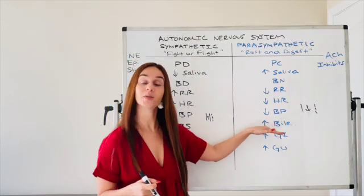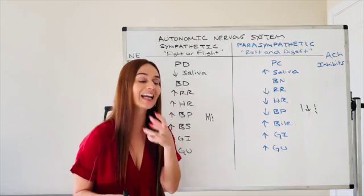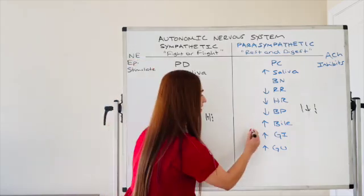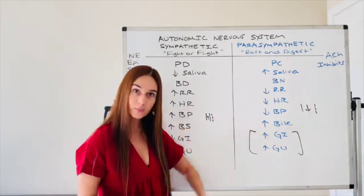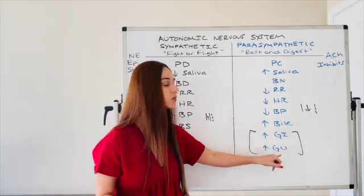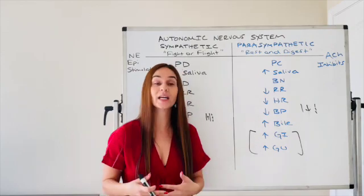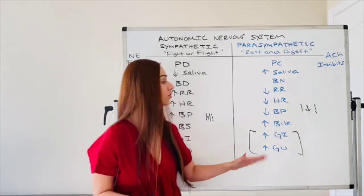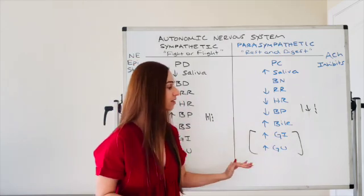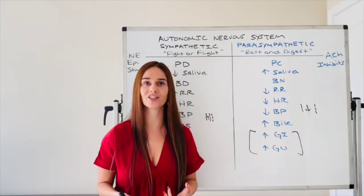Instead of glucose being released, bile will be released to aid in digestion. And again, this is your primary purpose of this system. I want to digest. So peristalsis is increased and I want to eliminate. So we're eliminating with pee and poop. We have to eliminate toxins from our body through pee and poop. So increase in gastrointestinal, increase in genital urinary. So increase urinary production.